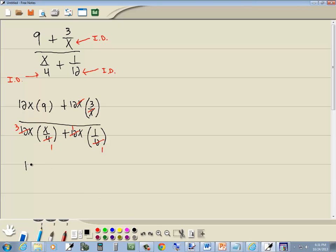So we're left with 12x times 9, plus 12 times 3, over 3x times x. So the 3, the x, and this x. Plus, these 1's don't do anything, so I'll just write an x.